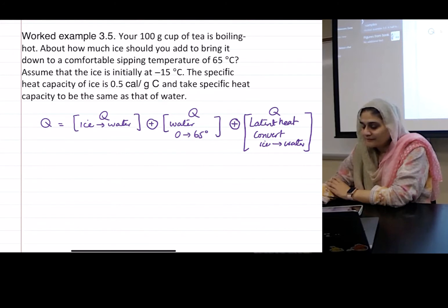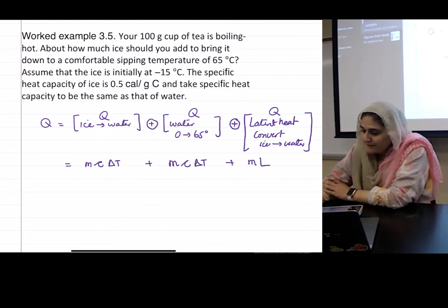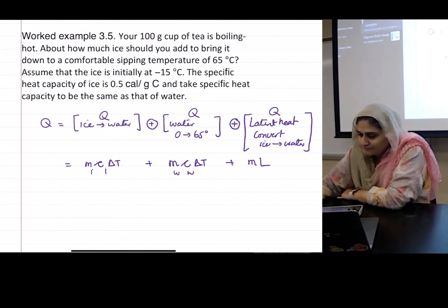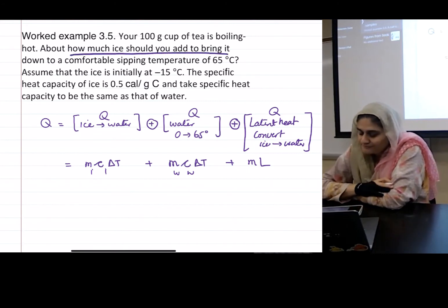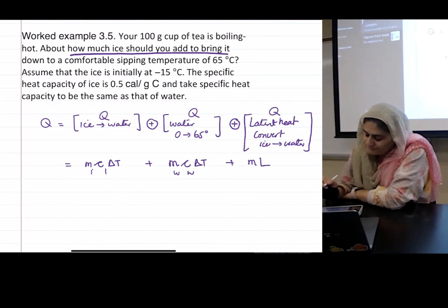So how do I do that? Again, Q will be m_ice c delta T. What will this be? m c delta T. And what was this? m L. Oh, this should be ice, I want to call it ice. This should be water, and that's the mass. And I'm looking for what? How much ice should you add?